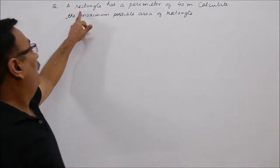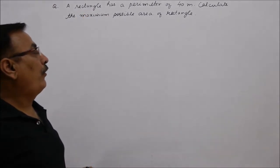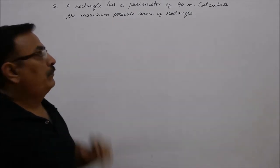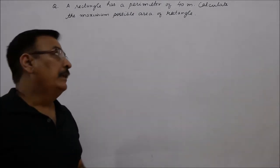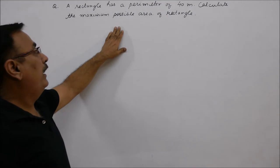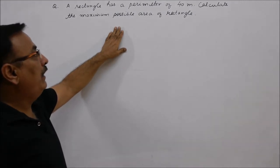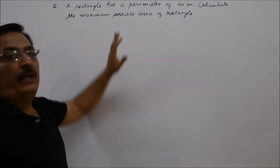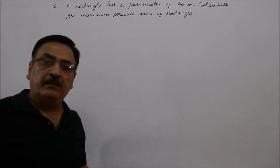Let's look at this question. This rectangle has a perimeter of 40 meters. Calculate the maximum possible area of the rectangle. So this question is, how do we know the maximum value of area? By making use of maxima and minima.